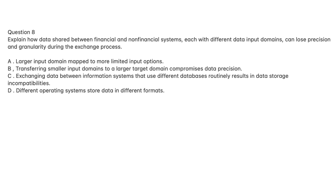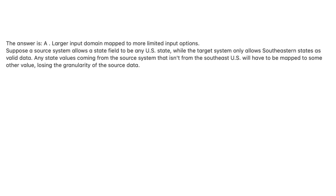Question 8. Explain how data shared between financial and non-financial systems, each with different data input domains, can lose precision and granularity during the exchange process. A. Larger input domain mapped to more limited input options. B. Transferring smaller input domains to a larger target domain compromises data precision. C. Exchanging data between information systems that use different databases routinely results in data storage incompatibilities. D. Different operating systems store data in different formats. The answer is A. Suppose a source system allows a state field to be any U.S. state, while the target system only allows southeastern states as valid data. Any state values from the source system that aren't from the southeast U.S. will have to be mapped to some other value, losing the granularity of the source data.